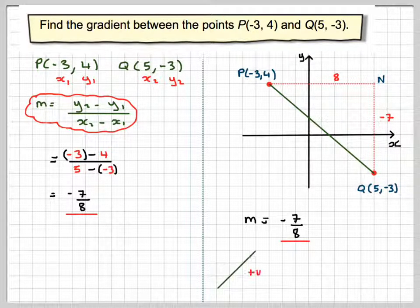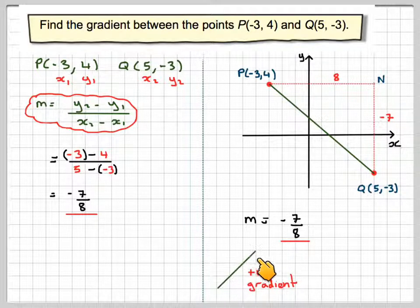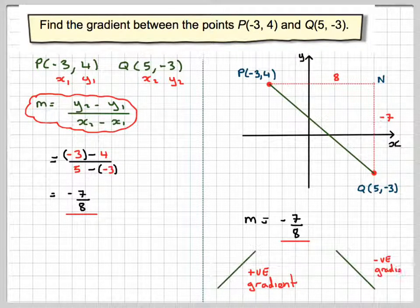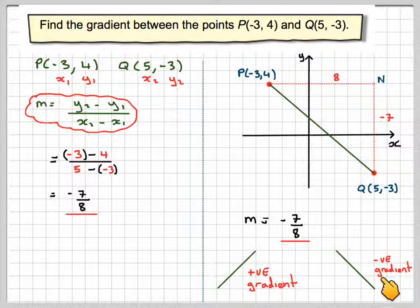In summary, a gradient which goes this way is said to be positive, and a gradient which goes this way is said to be negative.